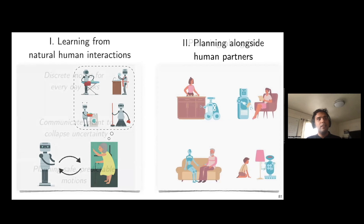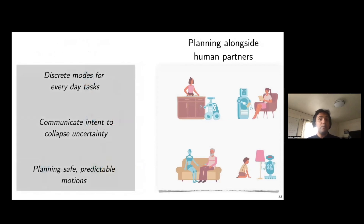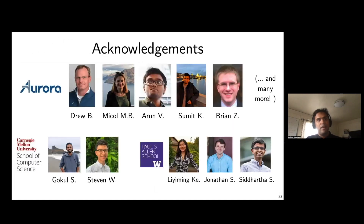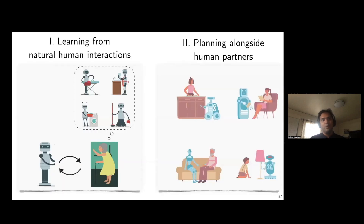For challenge two — planning alongside human partners — key questions include: what are the modes for everyday tasks and how do we learn them? How should a robot communicate its intent or understand others' intent? Most importantly, any robot in close human proximity must be safe and predictable. I'm really excited to work with my students on these challenges. I'd like to acknowledge the amazing co-authors, collaborators, and the entire team at Aurora for working tirelessly toward the product we have today. I would love to take some questions.